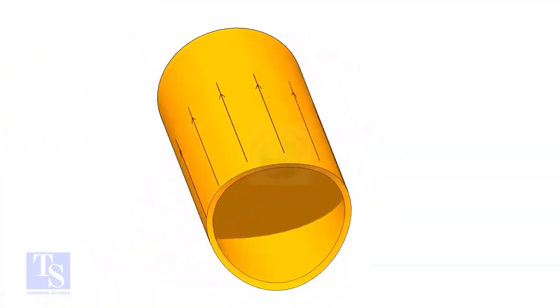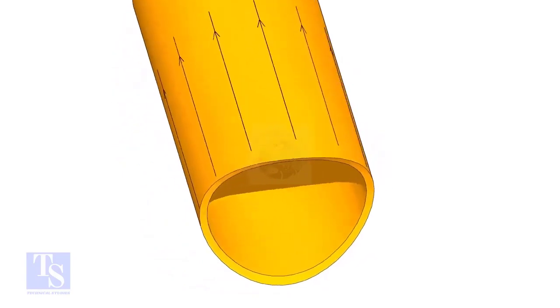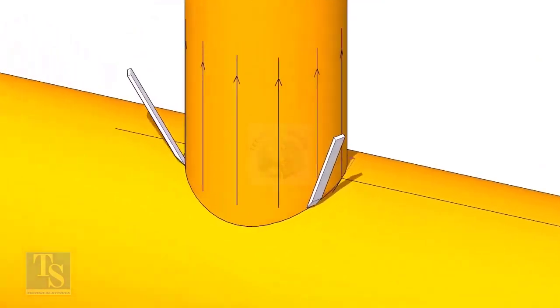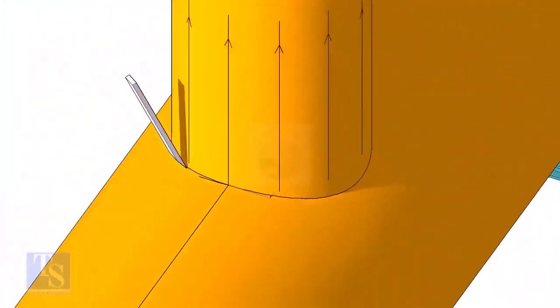After cutting and grinding the notch on the branch pipe, put it on the header. Make sure it is exactly in its position and mark the opening on the header as shown.